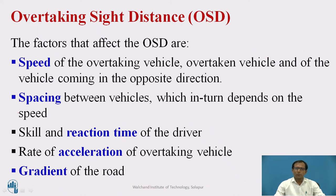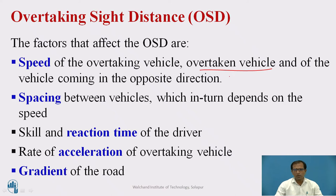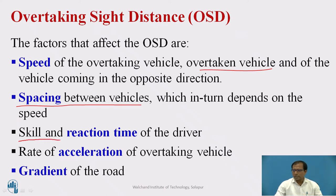The factors on which OSD depends include the different speeds of the vehicles involved: the speed of the overtaking vehicle, the overtaken vehicle, and the opposite vehicle. We must calculate the length of overtaking sight distance considering all three vehicles. The spacing between these vehicles and the reaction time and skill of the driver during the overtaking operation are also parameters — some drivers have less reaction time, some have more, which affects the overtaking operation.